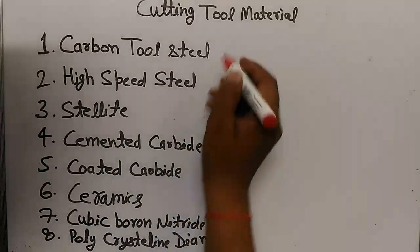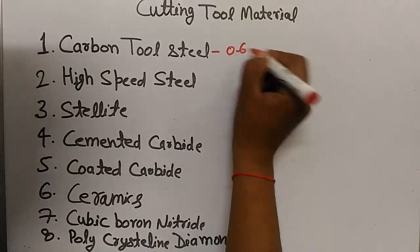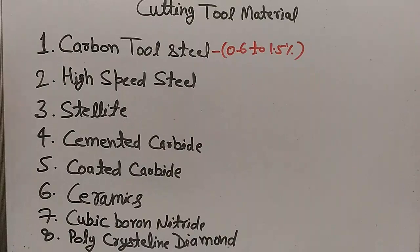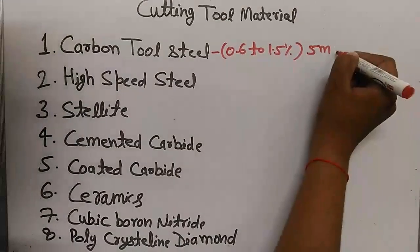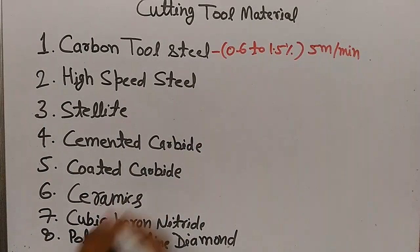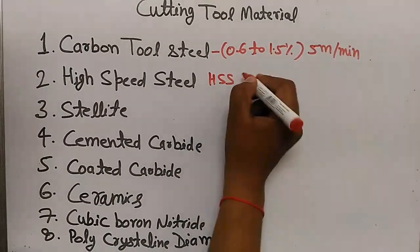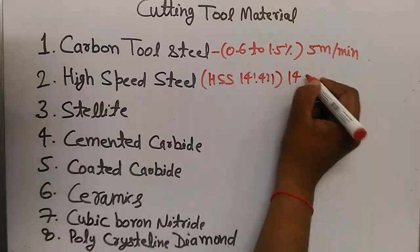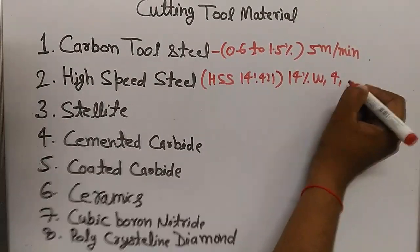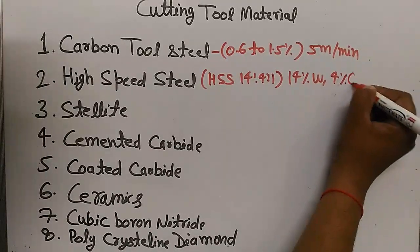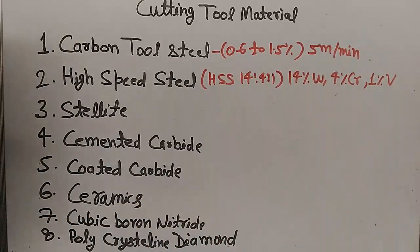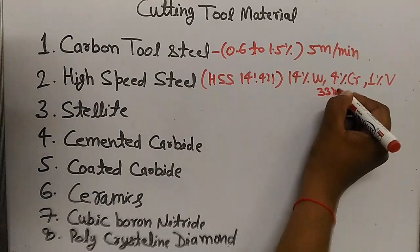Carbon tool steel is nothing but a plain carbon steel having 0.6% to 1.5% carbon, and the maximum cutting speed for this material is 5 meters per minute. High speed steel (HSS) 18-4-1 contains 14% tungsten, 4% chromium, and 1% vanadium, with the remaining being carbon and iron. The maximum cutting speed for HSS is 33 meters per minute.